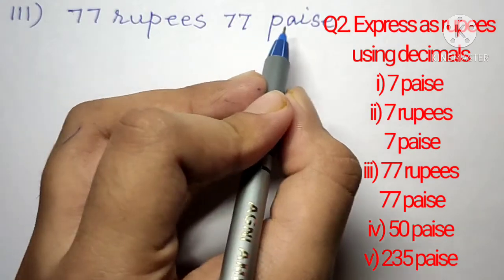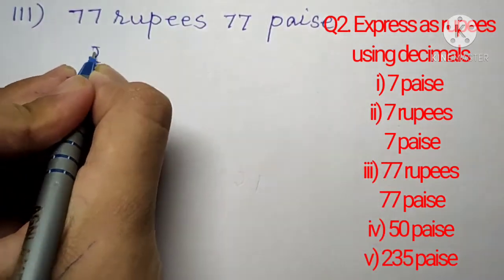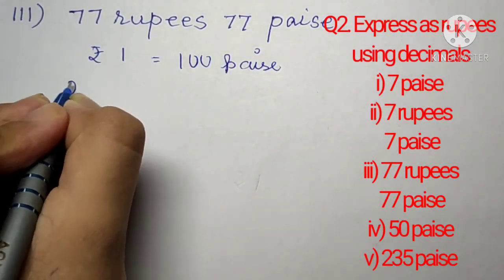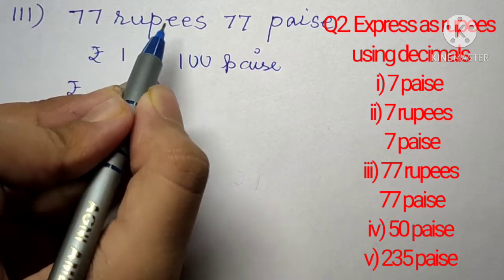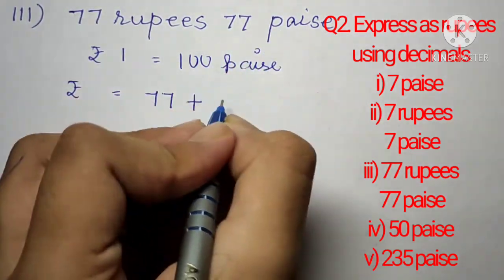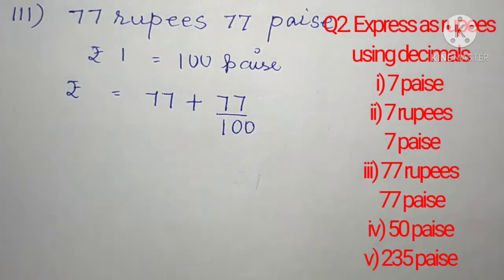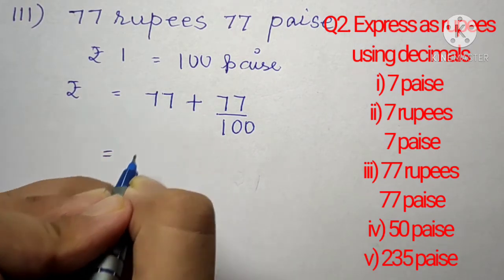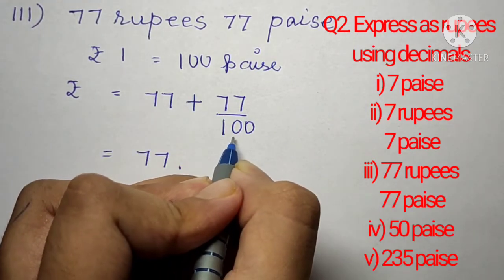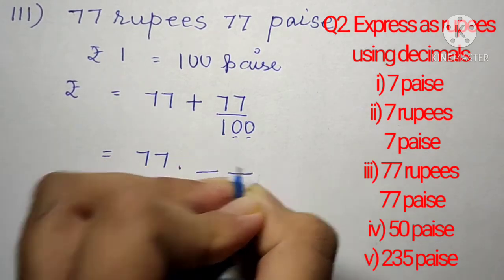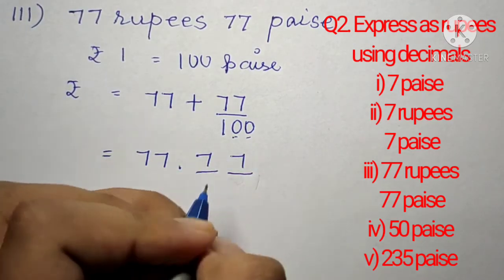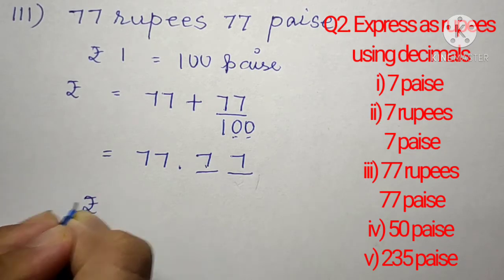Question number 2, part 3: 77 rupees 77 paise. Rupees 1 equals 100 paise. We don't divide 100 by the 77 rupees since it is already in rupees form. We write rupees equals 77 plus 77 divided by 100. The 77 rupees goes on the left of the decimal point. Since 100 has two zeros, two digits are needed on the right, and 77 already has two digits, so the answer is rupees 77.77.